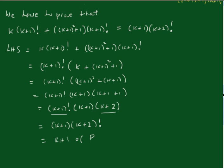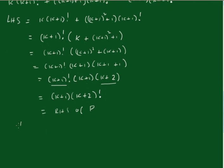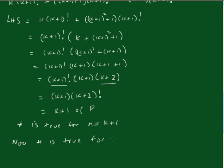This equals the right hand side of the proof statement. So the statement is true for n equals k+1. Since the statement is true for n equals 1 and true for n equals k+1 whenever it's true for n equals k, by Mathematical Induction the statement is true for all n greater than or equal to 1.